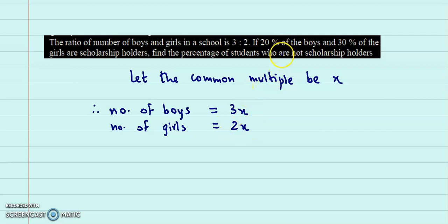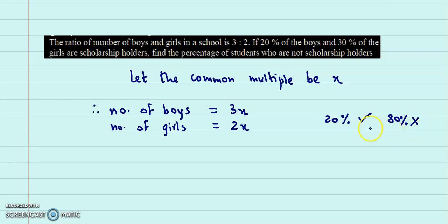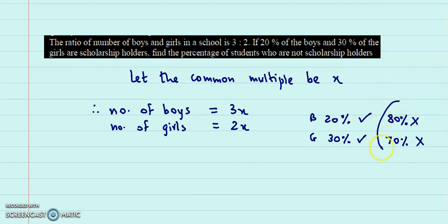20% of boys and 30% of girls are scholarship holders, but we need the percentage of students who are not scholarship holders. So if 20% of boys have scholarships, then obviously 80% of boys do not have scholarships. Likewise, if 30% of girls are scholarship holders, then 70% of the girls will not be scholarship holders, and we are interested in this part — the persons who are not scholarship holders.